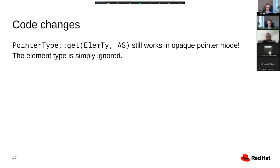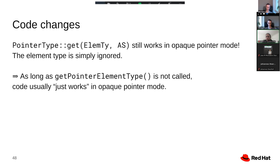One important aspect to mention here is that code like this, so code that constructs a pointer to a specific element type, still continues working in opaque pointer mode. The element type is simply ignored in that case. The result of that is that code that has been written to work with typed pointers essentially just works in opaque pointer mode as long as you don't go out of your way to access the pointer element type.